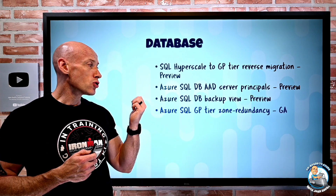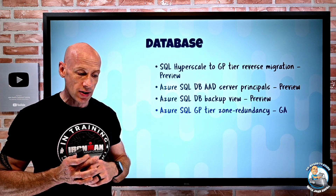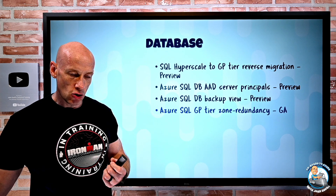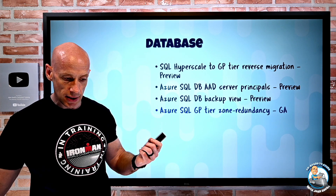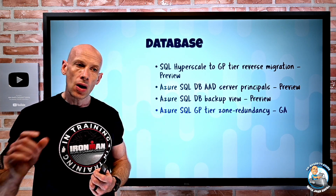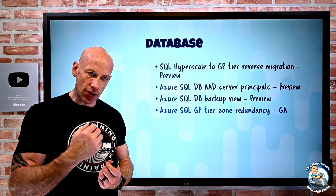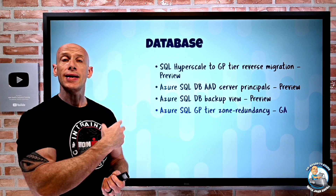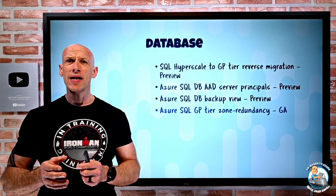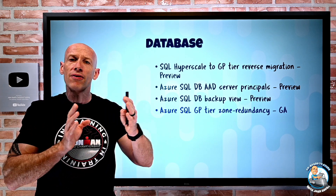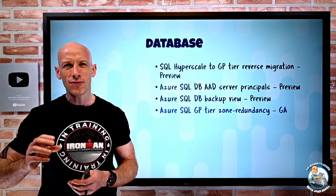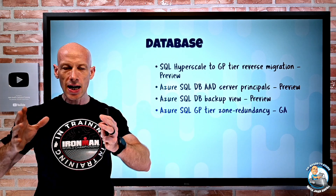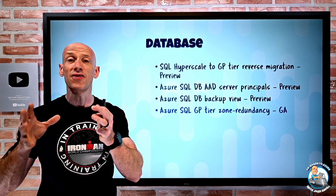Azure SQL General Purpose tier now has a zone redundancy option. When creating a SQL database — whether provisioned, serverless, or Elastic Pool — in the compute and storage details there's now an option to make it zone redundant. This gives resiliency from availability zone failures, as availability zones have independent power, cooling, and networking, protecting against a particular facility failure.